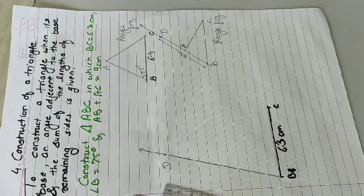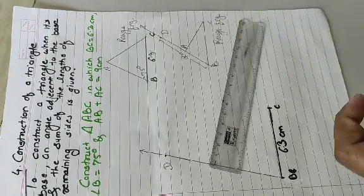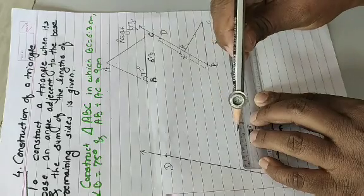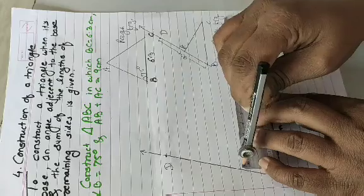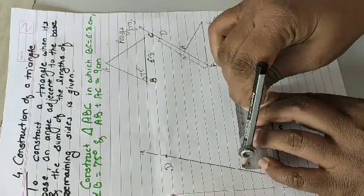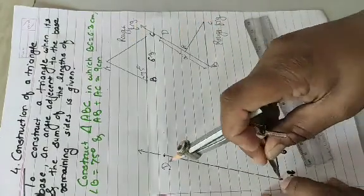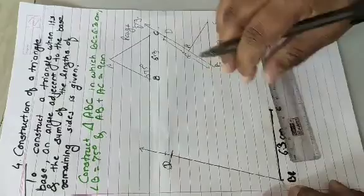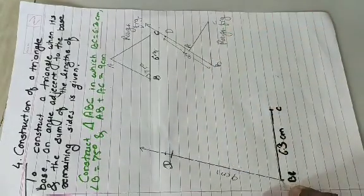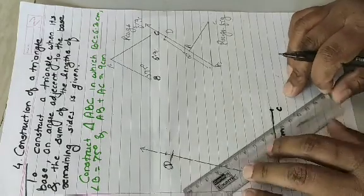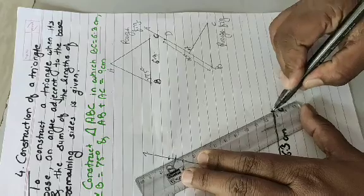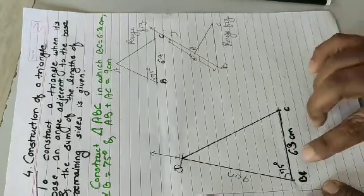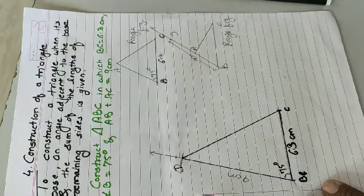Take a compass and set the distance to 9 cm. From B, mark point D on ray BD such that BD = 9 cm. Now join D and C. The next step is to draw the perpendicular bisector of DC. Angle B = 75° is already set.